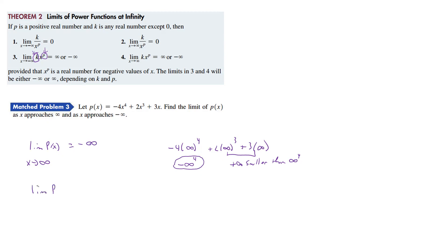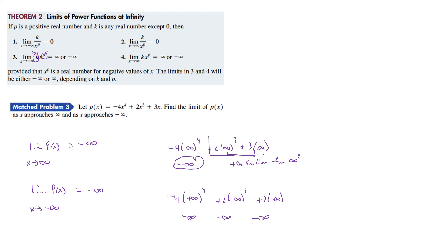Now as X approaches negative infinity, we have minus 4 times negative infinity to the fourth, plus 2 times negative infinity to the third, plus 3 times negative infinity. The fourth power makes that first term positive, but multiplied by minus 4 it becomes negative infinity. The third power term is negative infinity, and the last term is also negative infinity. The key is that these two smaller pieces are much smaller than the leading term, so the result is still negative infinity.